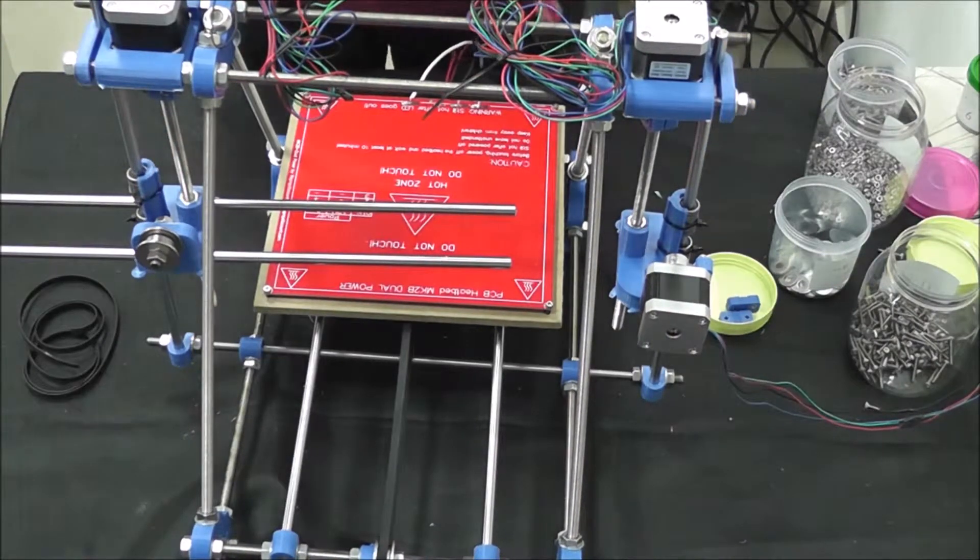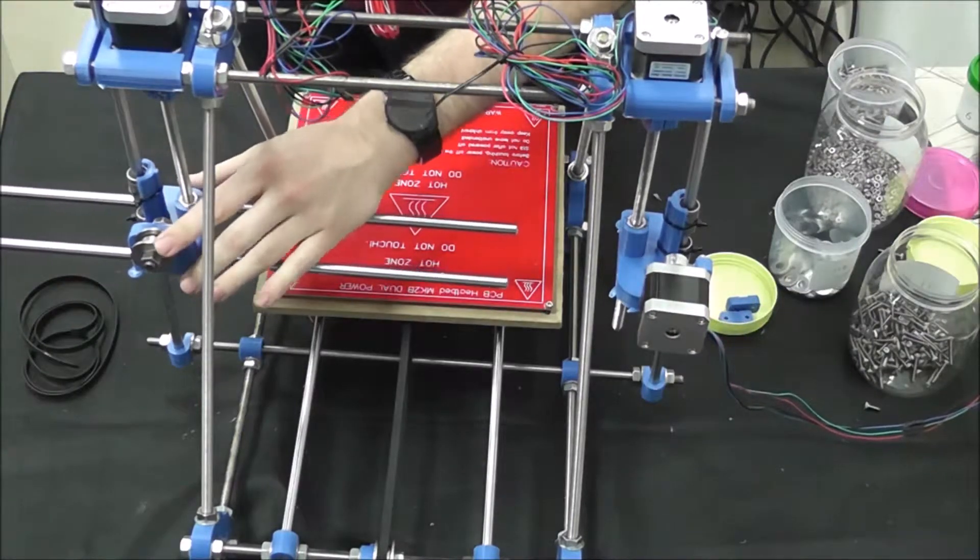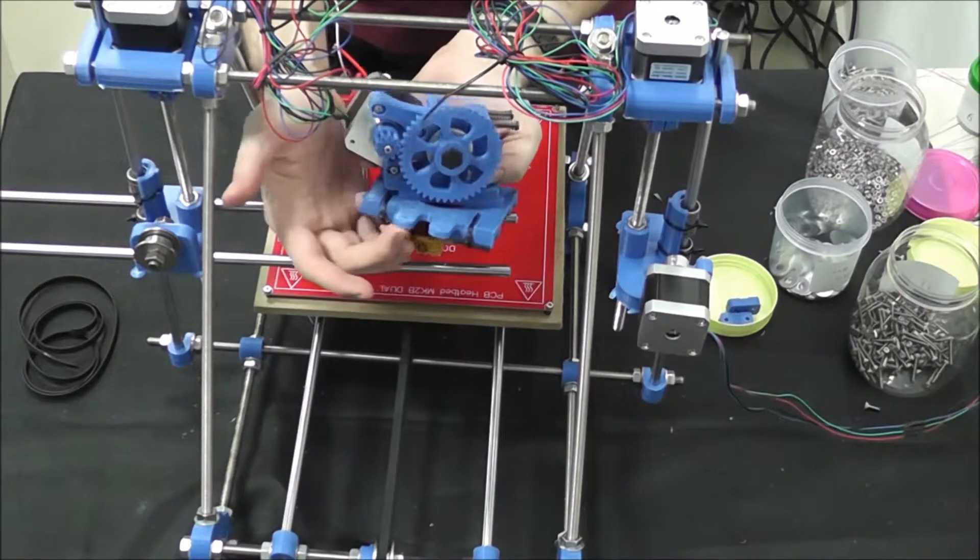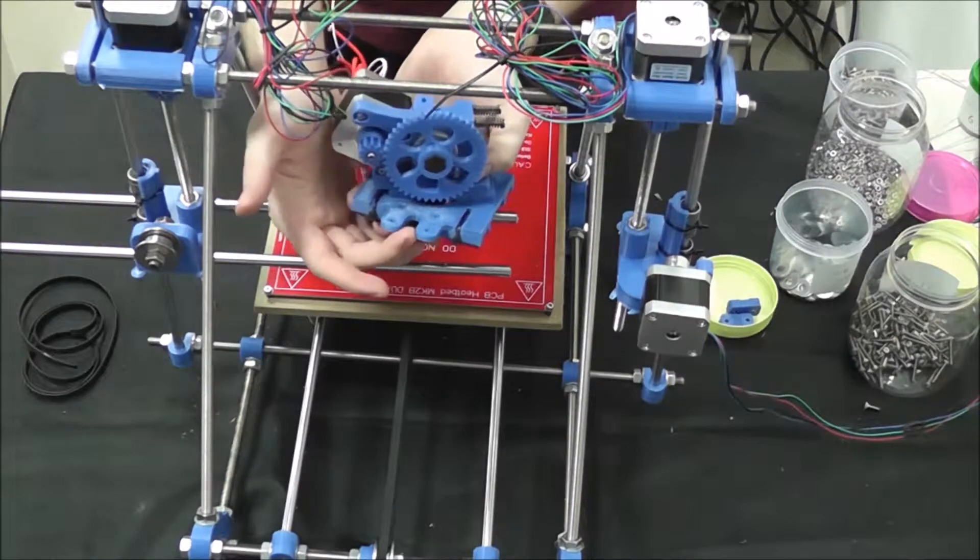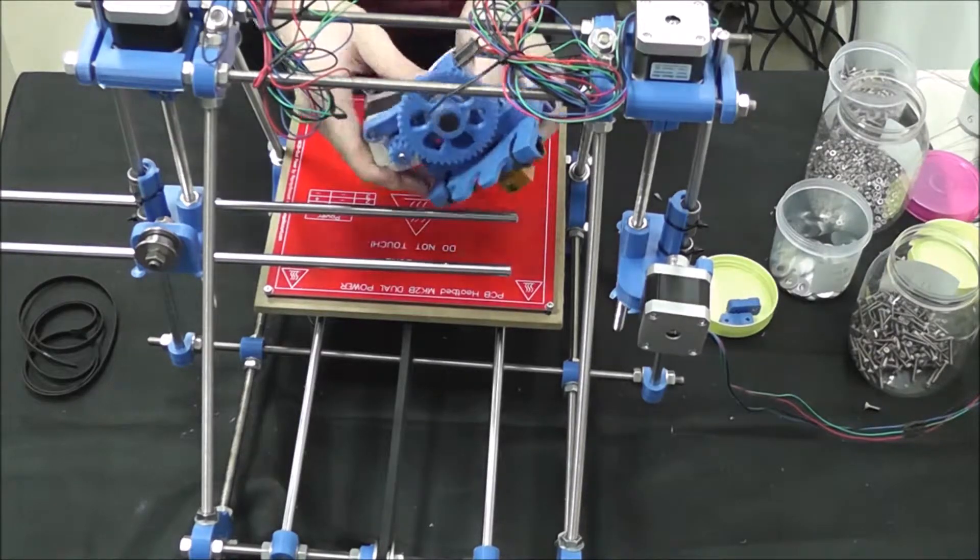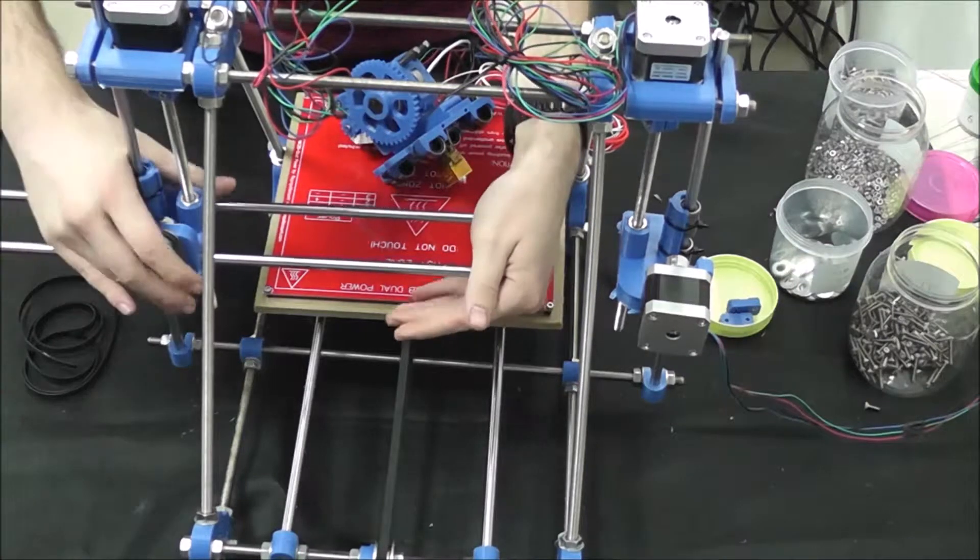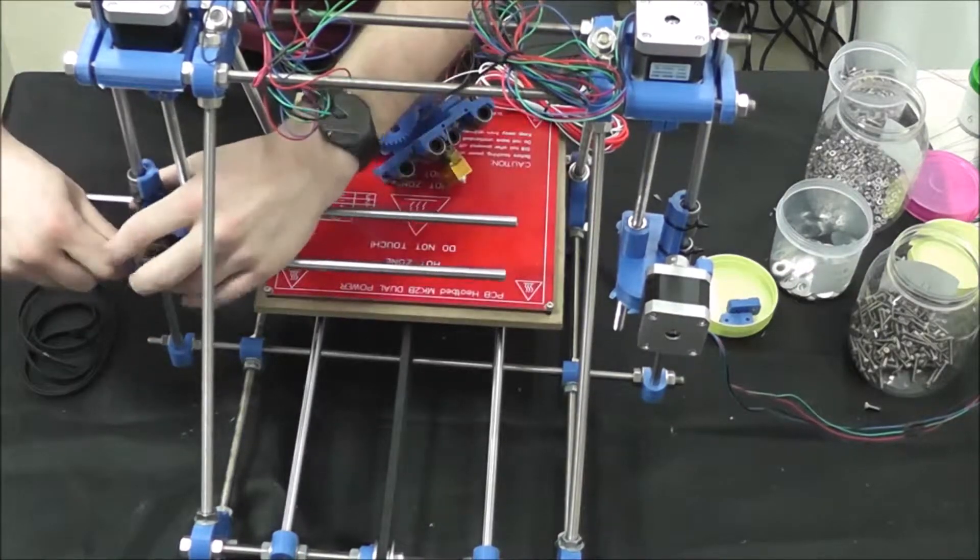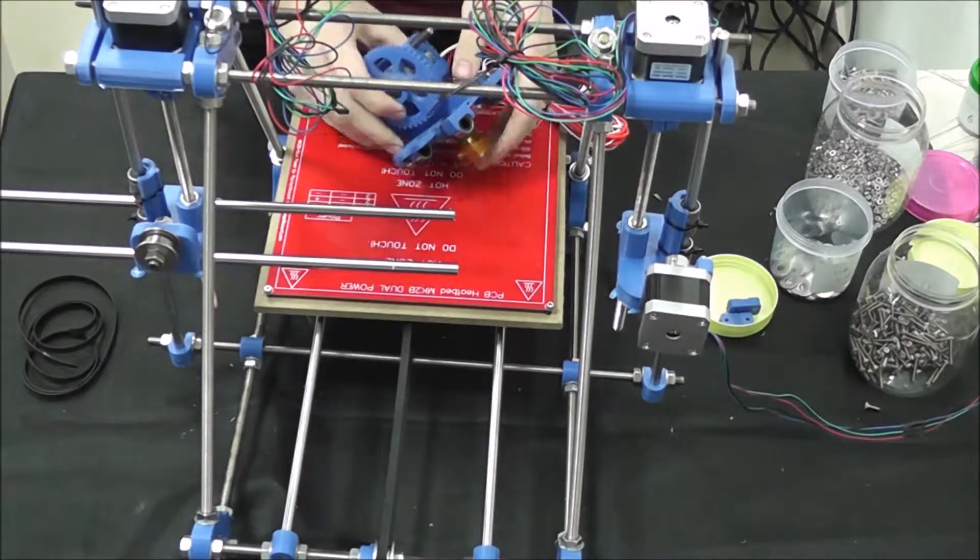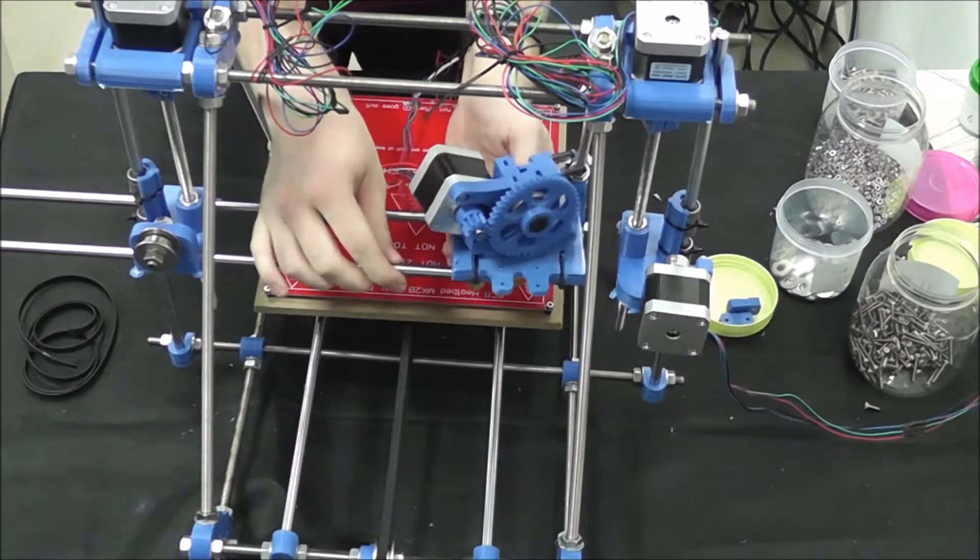Now you see we have the motor and the bearing on this side. You'll notice on your X carriage there's two little things that stick out. This is what the belt clamps are going to clamp the belt down to the carriage, just to keep it tight basically. So we're going to slide that facing the same direction as those onto the linear bearings.